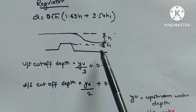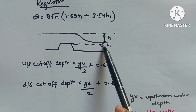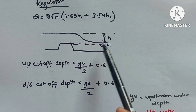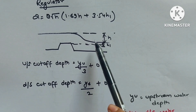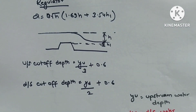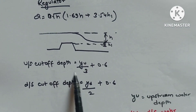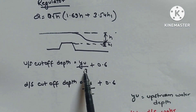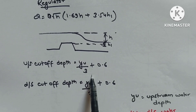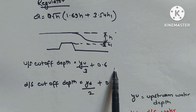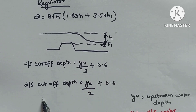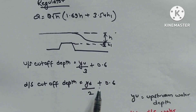Regulator design formula: Q = B√H × (1.69H + 3.54H₁). Upstream cutoff depth = Yu/3 + 0.6. Downstream cutoff depth = Yd/2 + 0.6, where Yu is upstream water depth and Yd is downstream water depth.